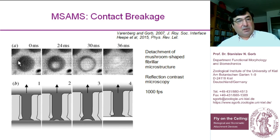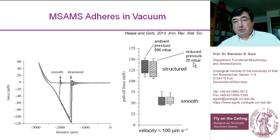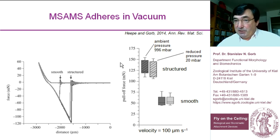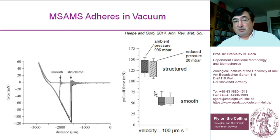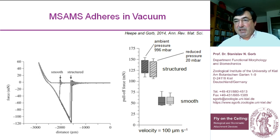You might say the void formation observed during detachment suggests suction, but this is not suction. We made an experiment at ambient pressure and at reduced pressure in vacuum, and there is statistically no significant difference between the two conditions. This means the material can even be used for space applications — it adheres as well in vacuum as under ambient conditions, and still outperforms smooth material significantly. The effect is based purely on contact formation and specific contact breakage geometry, not on suction. At high detachment velocity there can be some suction contribution, but quasi-statically there is none.